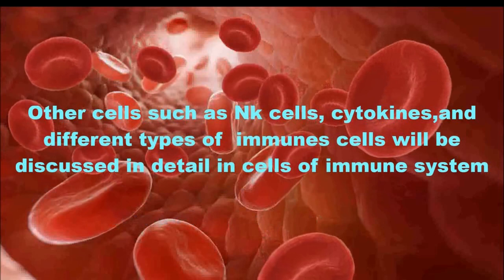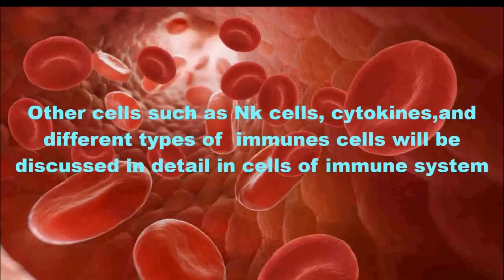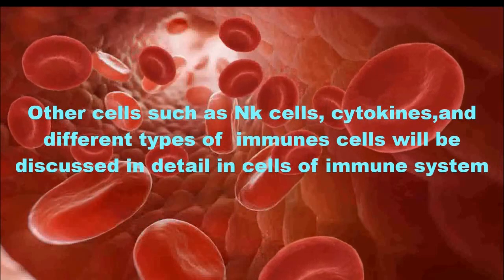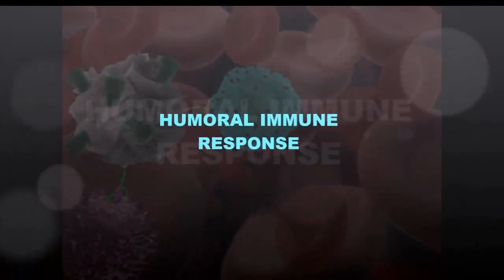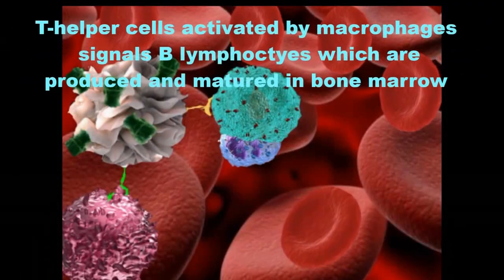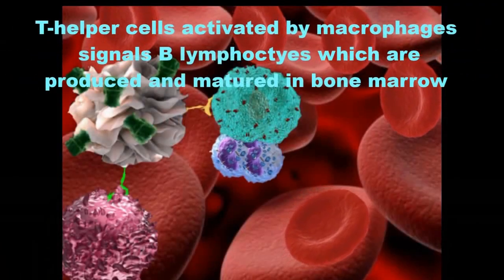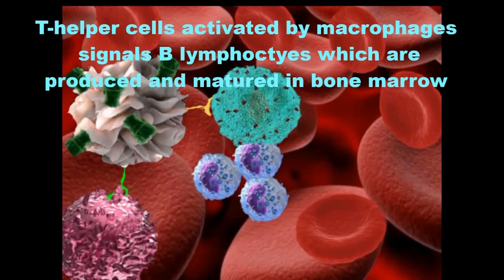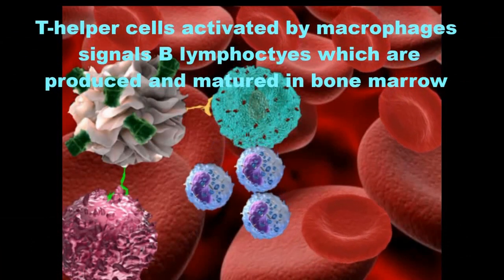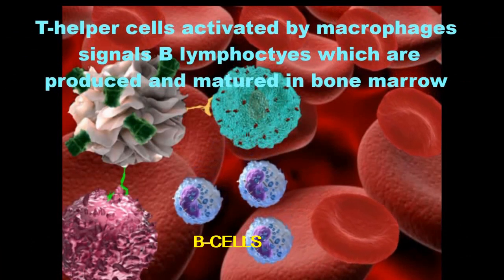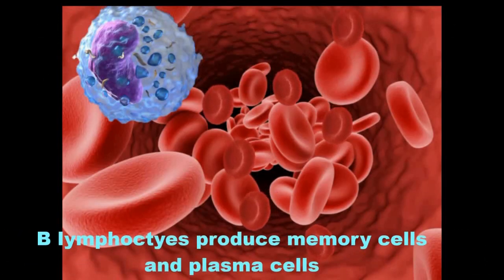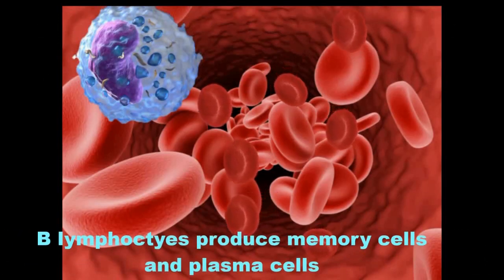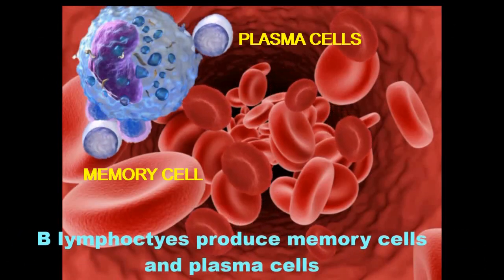Other cells such as natural killer cells, cytokines, and different types of immune cells will be discussed in detail in the cells of the immune system. In the humoral immune response, T-helper cells activated by the macrophage signal B lymphocytes, which are produced and matured in bone marrow. B lymphocytes produce memory cells and plasma cells.